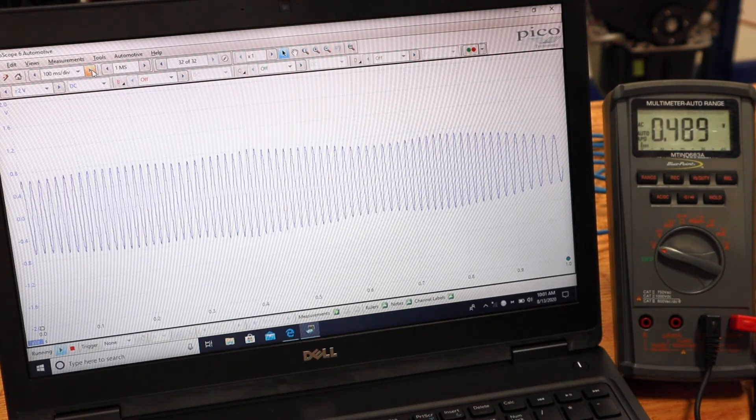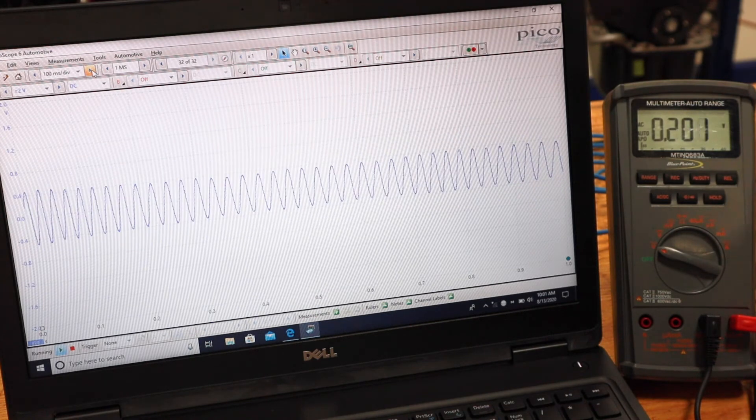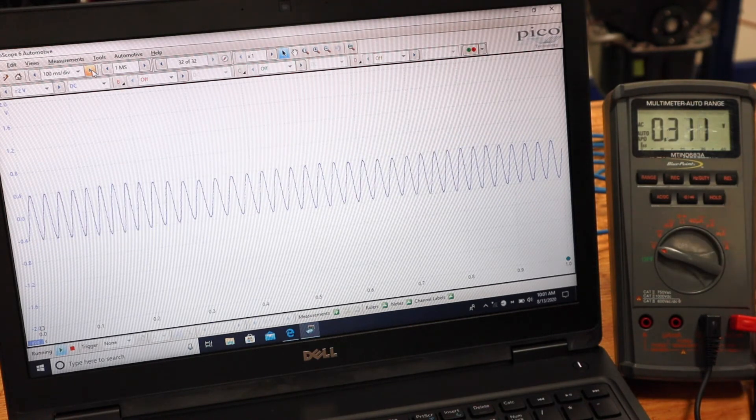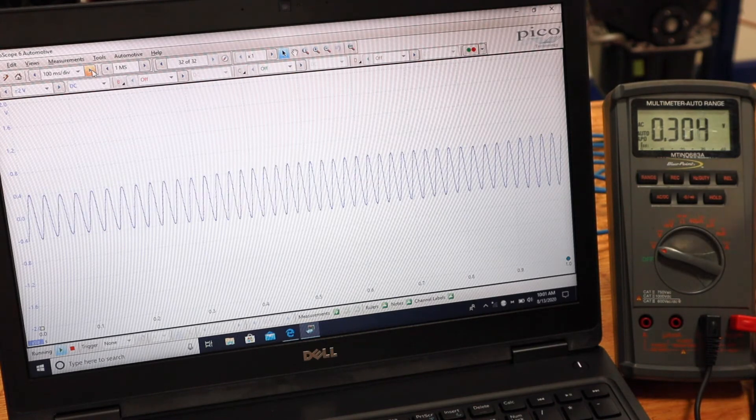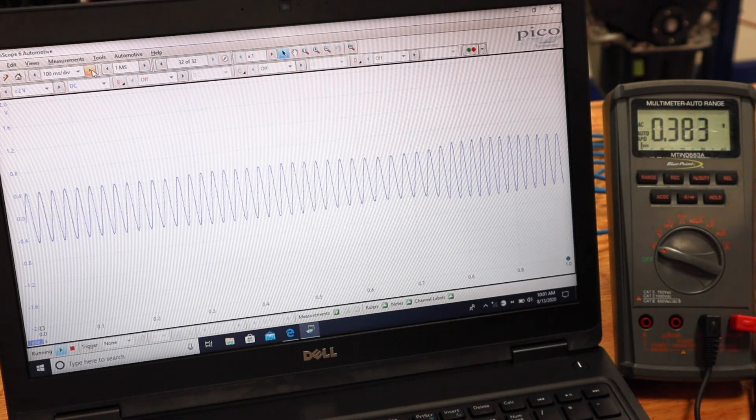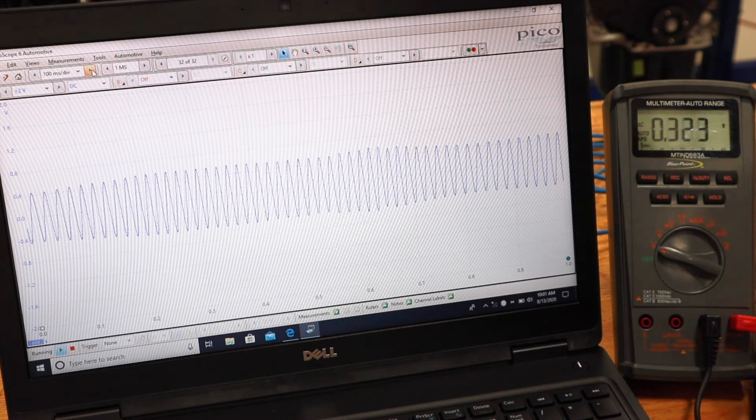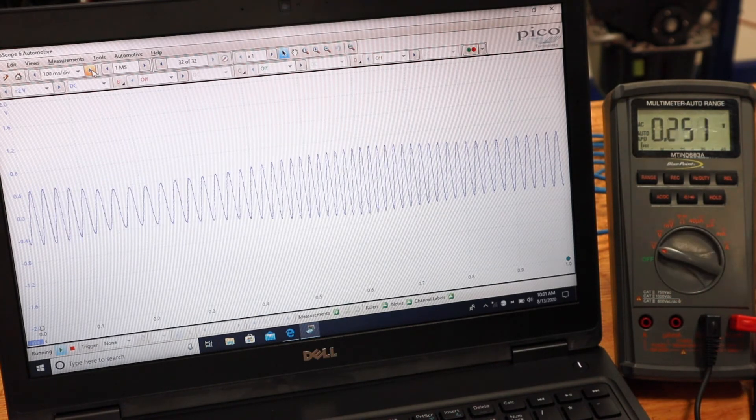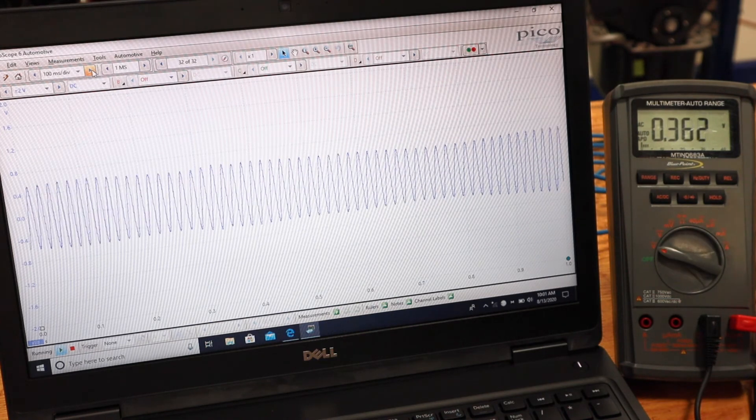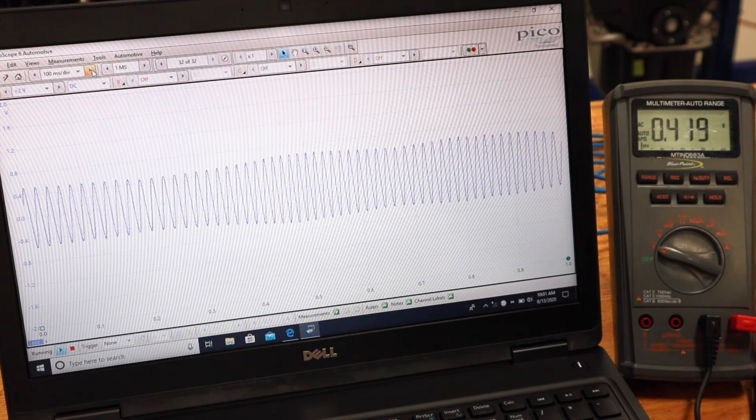So there's an AC sine wave if I slow down we can really see it where I've got peaks on the positive and the negative side and so this helps me understand what the reluctor looks like within this sensor. This one has got just consistent teeth all the way around and it also helps me understand what the meter does compared to an oscilloscope.